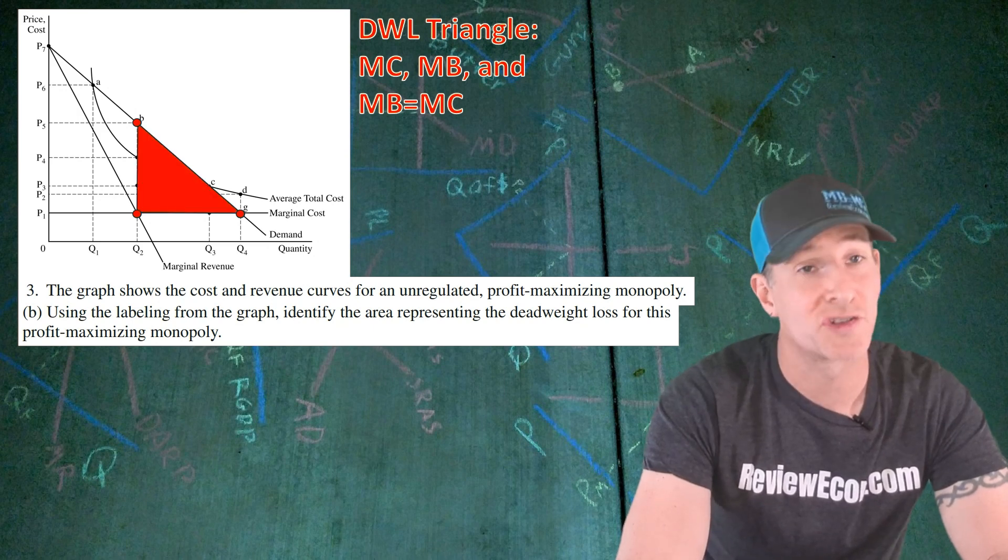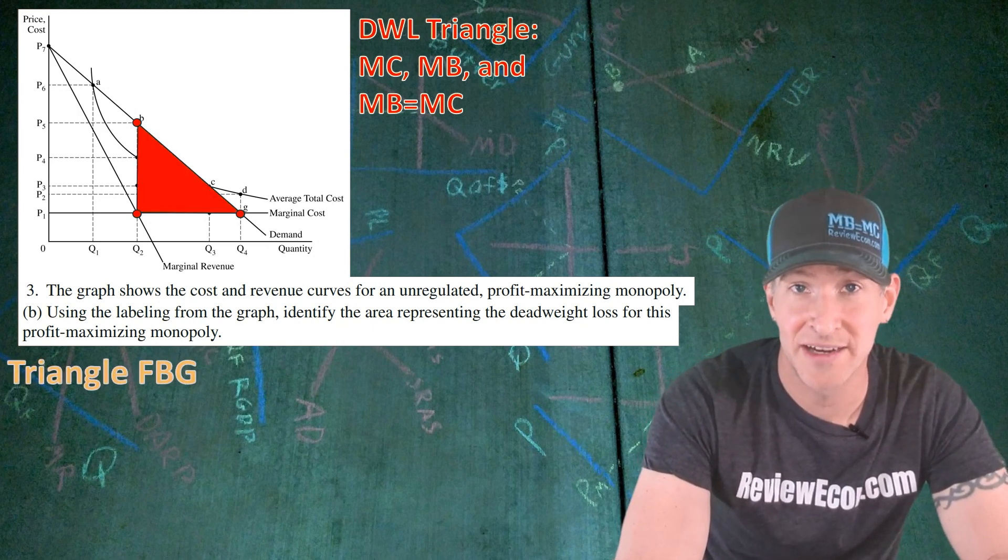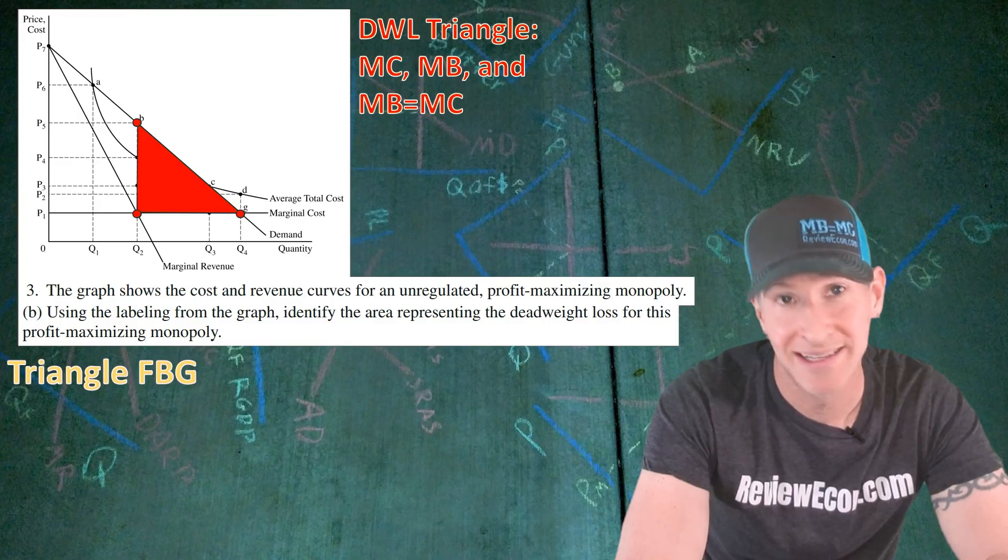And those three points give us our triangle of deadweight loss. Identify the corners of that triangle: F, H, G, and you get your point.